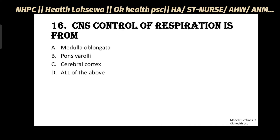Question No.16: CNS control of respiration is from - Medulla Oblongata, Pons, Cerebral Cortex, All of the Above. Answer: D - All of the Above. CNS control of respiration comes from all these structures.